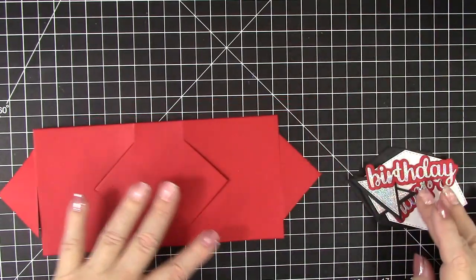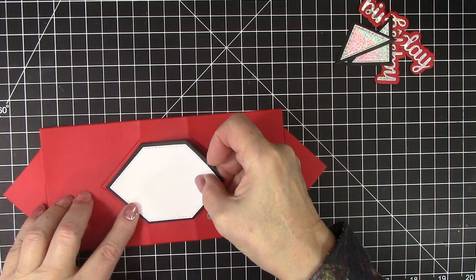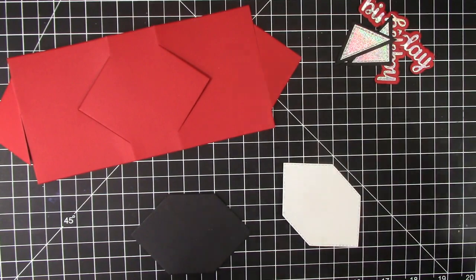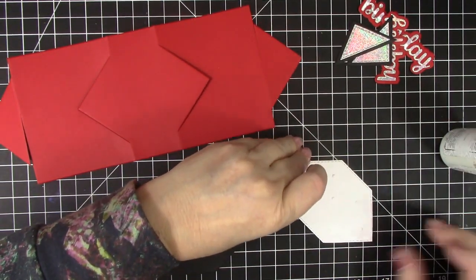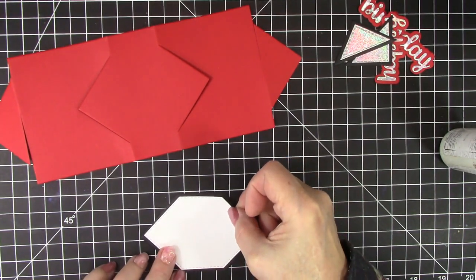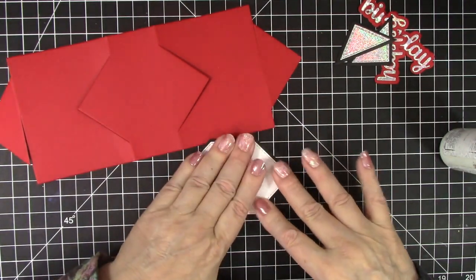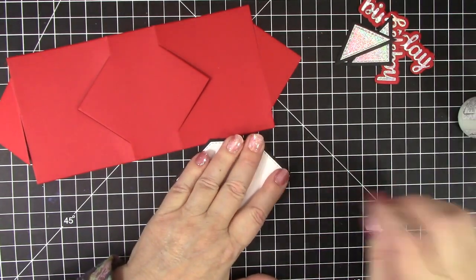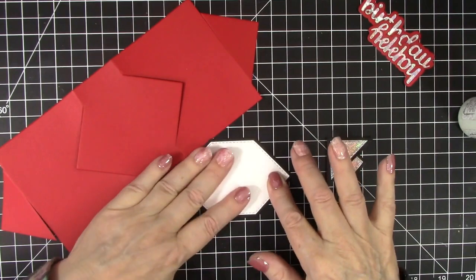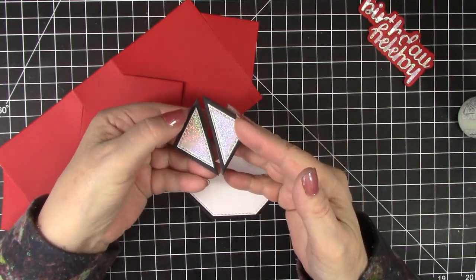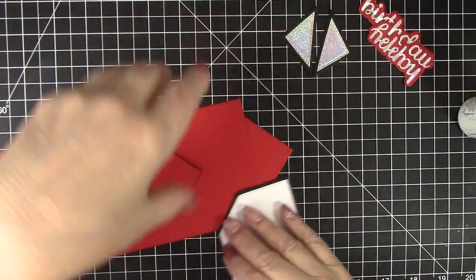So I have die cut the two front layered pieces. And they're going to go right there. So let's glue those together. Make sure they line up here. I got some new holographic card stock. So I'm making this a bright and cheerful table decoration for a birthday.